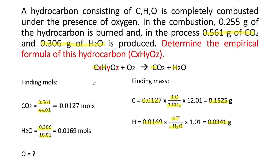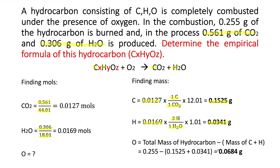Now, what about oxygen? Since we don't have the moles of O directly, we use the fact that the total mass of the hydrocarbon minus the mass of C plus H must be the remaining amount of oxygen — because the hydrocarbon contains only C, H, and O. So we subtract the mass of C and H from the total mass of the hydrocarbon, 0.255 grams, and we get that the mass of oxygen is 0.0684 grams. This mass of oxygen is directly proportional to the oxygen in the hydrocarbon, so now we have the mass of each component: C, H, and O.